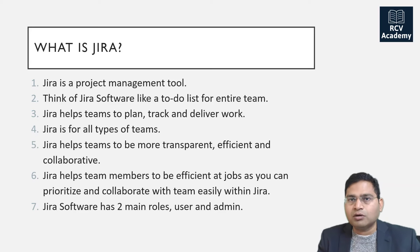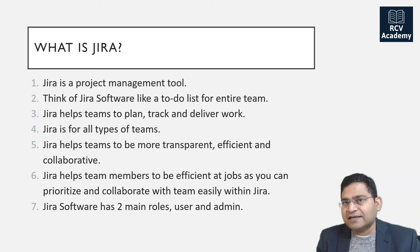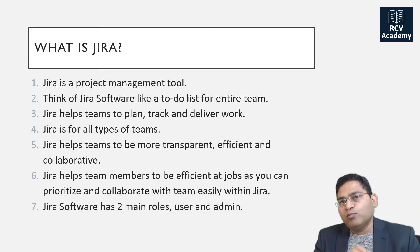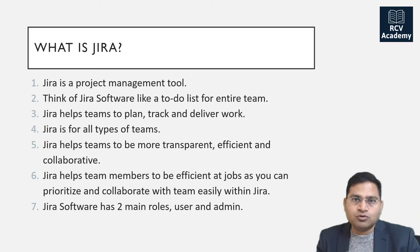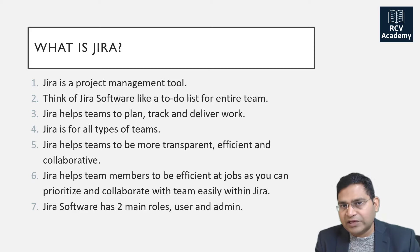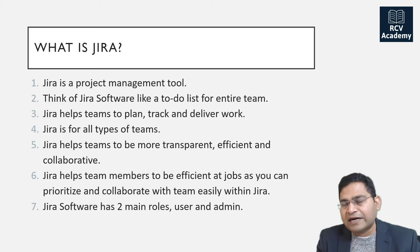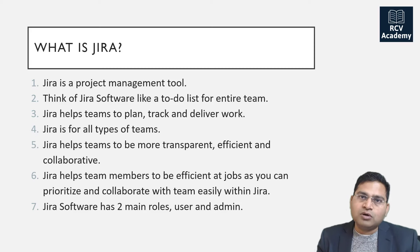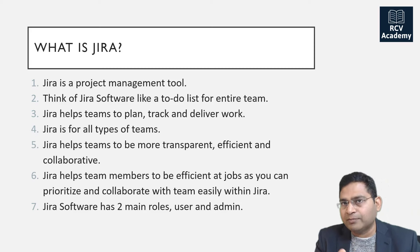That level depends on who is managing how many people across the organization or team. For you as an end user, you can think of it as a to-do list where you will be allocated certain tasks or work items. You can see those on the Jira board and move them as you progress. For example, if you are working on module 1, you can move that work item to 'in progress' on the board, visible to everyone, and update progress in the comments.